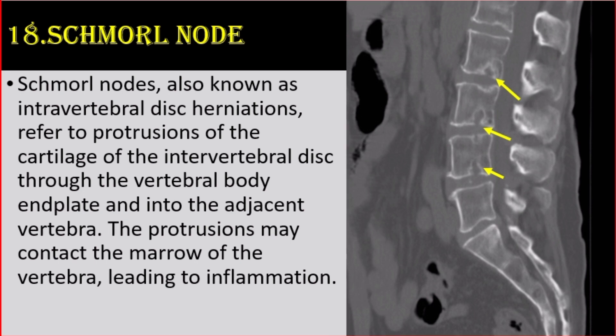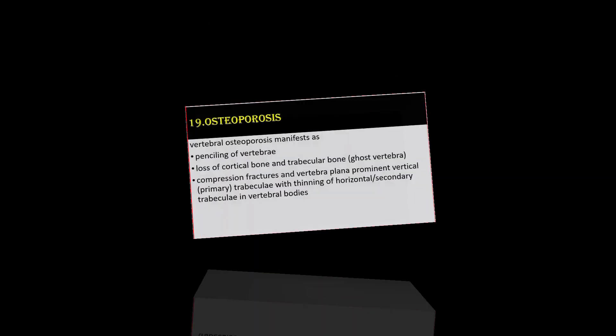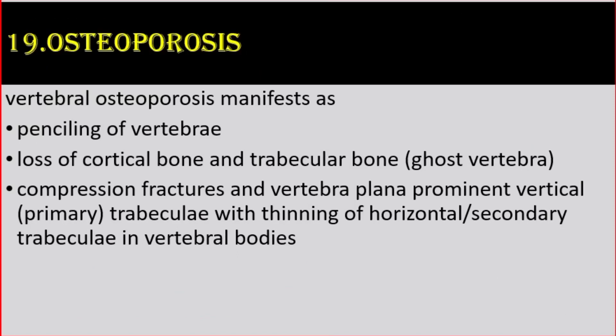Number 18: Schmorl node. Schmorl nodes, also known as intravertebral disc herniations, refer to protrusion of the cartilage of the intervertebral disc through the vertebral endplate and into the adjacent vertebra. The protrusions may contact the marrow of the vertebra, leading to inflammation. Number 19: Osteoporosis. Vertebral osteoporosis manifests as penciling of vertebrae, loss of cortical and trabecular bone (called ghost vertebra), compression fractures and vertebra plana, and prominent vertical trabeculae with thinning of horizontal trabeculae in vertebral bodies.